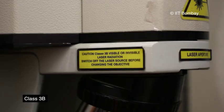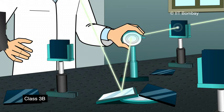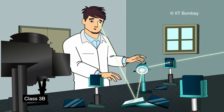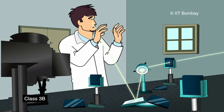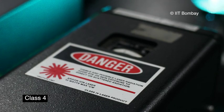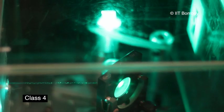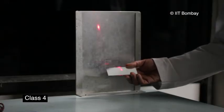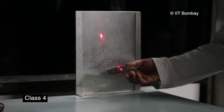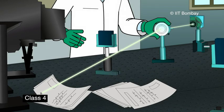Class 3B lasers can cause eye injury in spite of the aversion response. Specular reflection of Class 3B lasers can also cause eye injury. Class 4 lasers are high power lasers which can cause eye and skin injury. Specular and diffuse reflection from Class 4 lasers can result in injury. They can also start a fire.